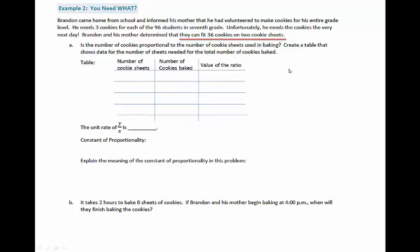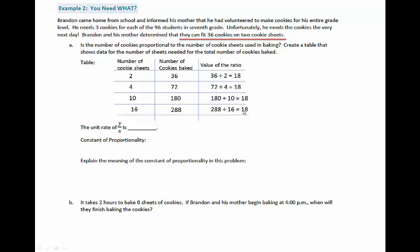We're going to create a table showing the number of sheets needed for the total number of cookies baked. The number of cookie sheets is in the first column, number of cookies baked in the second, and the value of each ratio in the third column. First, 2 cookie sheets for 36 cookies — the value of the ratio is 18. Then, doubling that: 4 cookie sheets for 72 cookies baked, and the value of that ratio is also 18. Then 10 cookie sheets is 180 cookies — 180 divided by 10 is 18. And 16 cookie sheets would be 288 cookies, giving a ratio value of 18. For all of these, the unit rate is 18 — the same for each one. That means my constant of proportionality, or k, is 18.